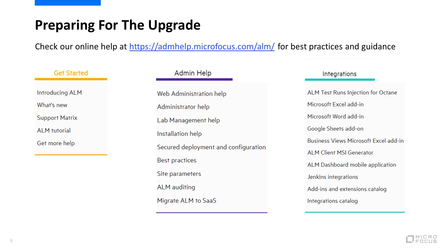In order to prepare for the upgrade, we recommend checking out our online help center. Under Getting Started, you can find information about new features of each release. You can also find the support matrix with information about the system requirements. Under the Admin Help, you can find the installation and upgrade guides. It is also recommended to look at the best practice guide for upgrade tips. Under Integrations, you can find the integration catalog to make sure all the integrating products are compatible with the ALM Quality Center version you are upgrading to.